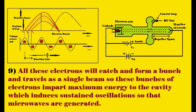As a result, the early electron, reference electron, and late electron all arrive at the cavity gap at the same time. When they come together they form a group called a bunch. This bunch is of high energy, and when these high-energy bunches reach the cavity, microwave oscillations are induced in the cavity.